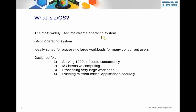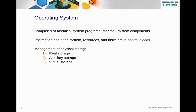So what is an address space? Every started task, or every TSO session, is actually an address space. When you log on to TSO, you create an address space. When you submit a batch JCL, that's an address space. Technically, think of an address space as a contiguous range going from zero to some number, broken up into 4K chunks — that's the virtual storage.